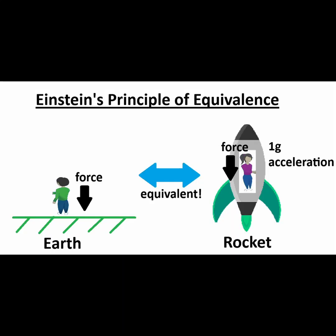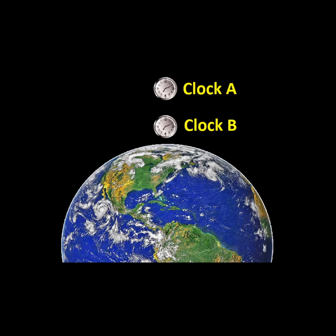Recall that Einstein's principle of equivalence says that this effect would also be exactly the same in a gravitational field. If you put two clocks on Earth, clock A high above clock B, then again clock A runs faster than clock B.